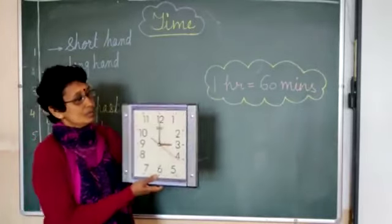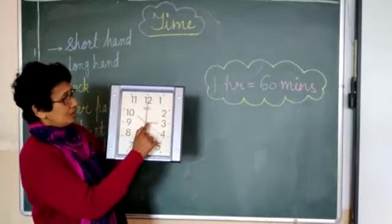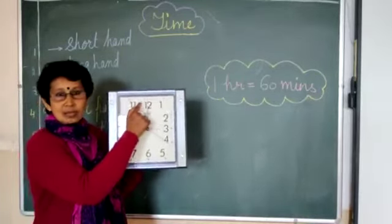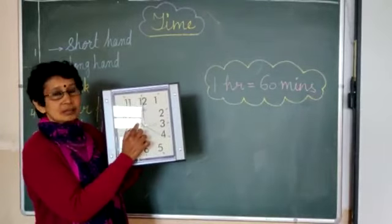Now, I want to show the time, three o'clock. See, the short hand is on three and the bigger hand is on twelve. Exactly on twelve. Now, the time is three o'clock.